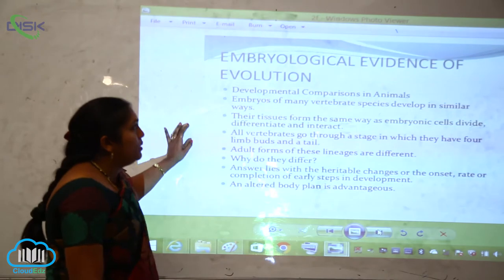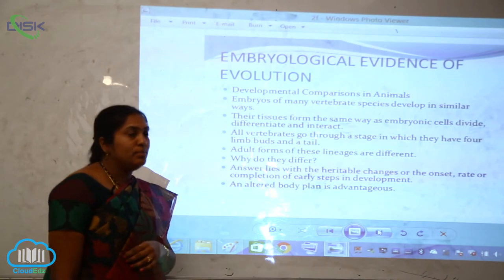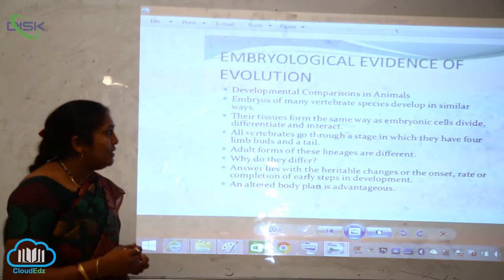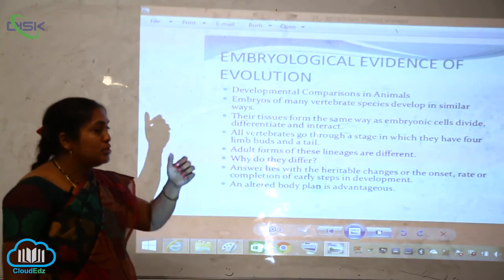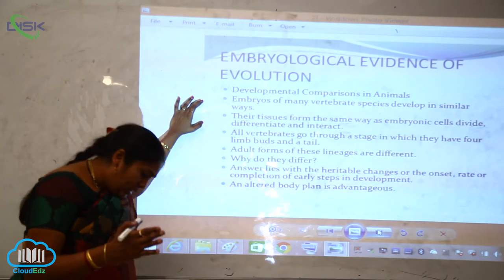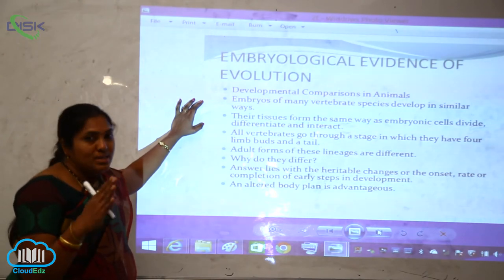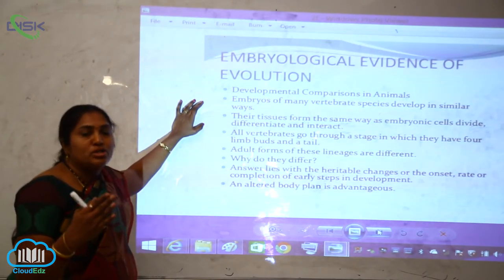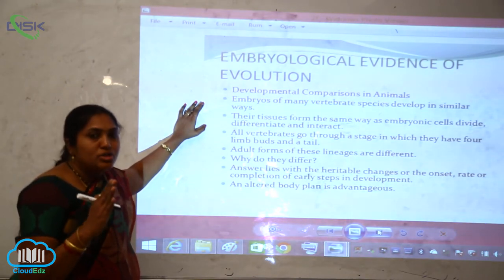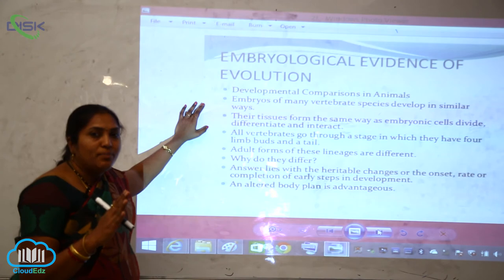Today, let us discuss the embryological evidences of evolution. Developmental comparison in animals shows that embryos of many vertebrate species develop in similar ways. Scientists have observed that though the organisms are different, their embryos show similarities during the process of development, indicating evolutionary significance and a common ancestry.